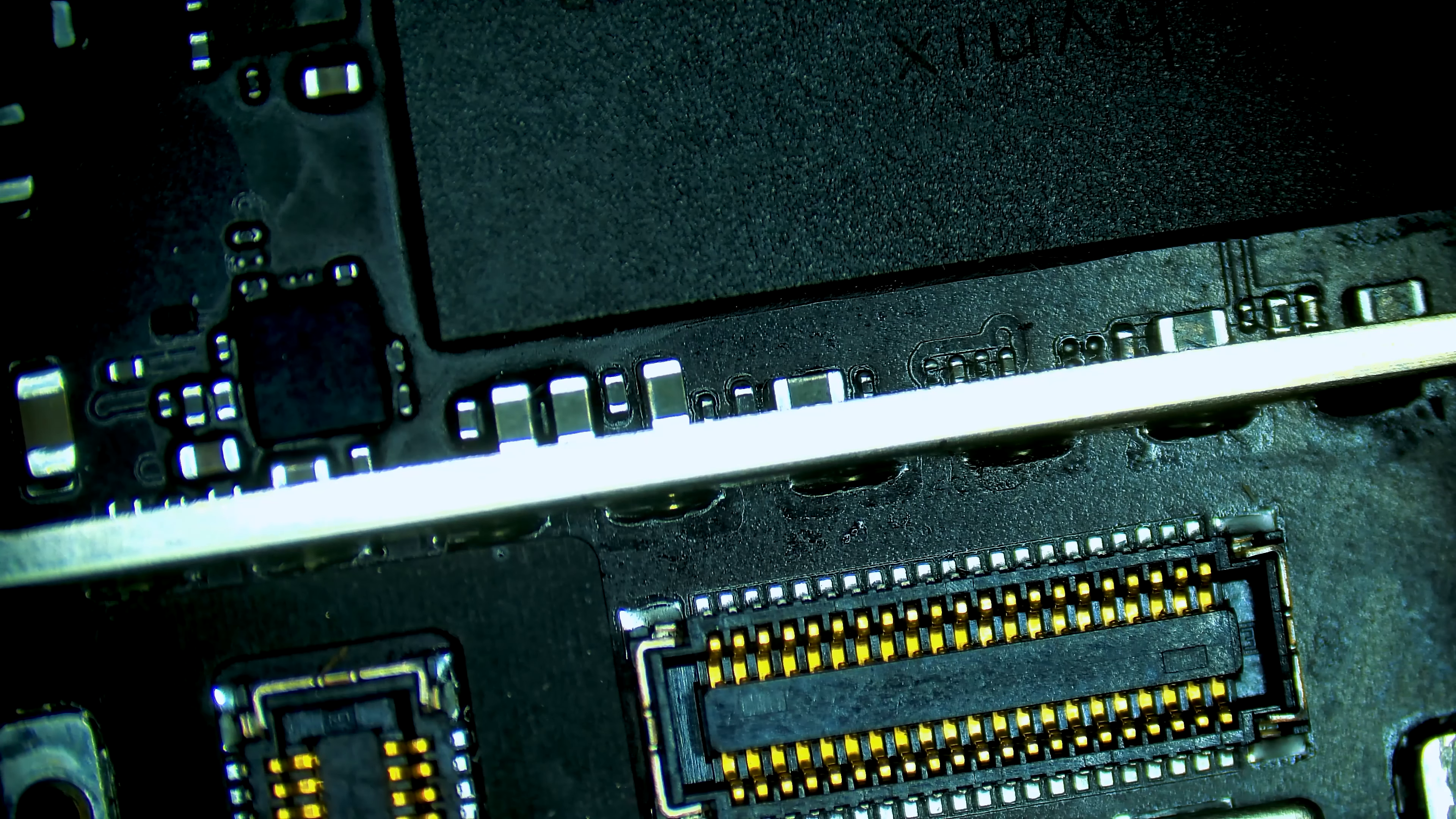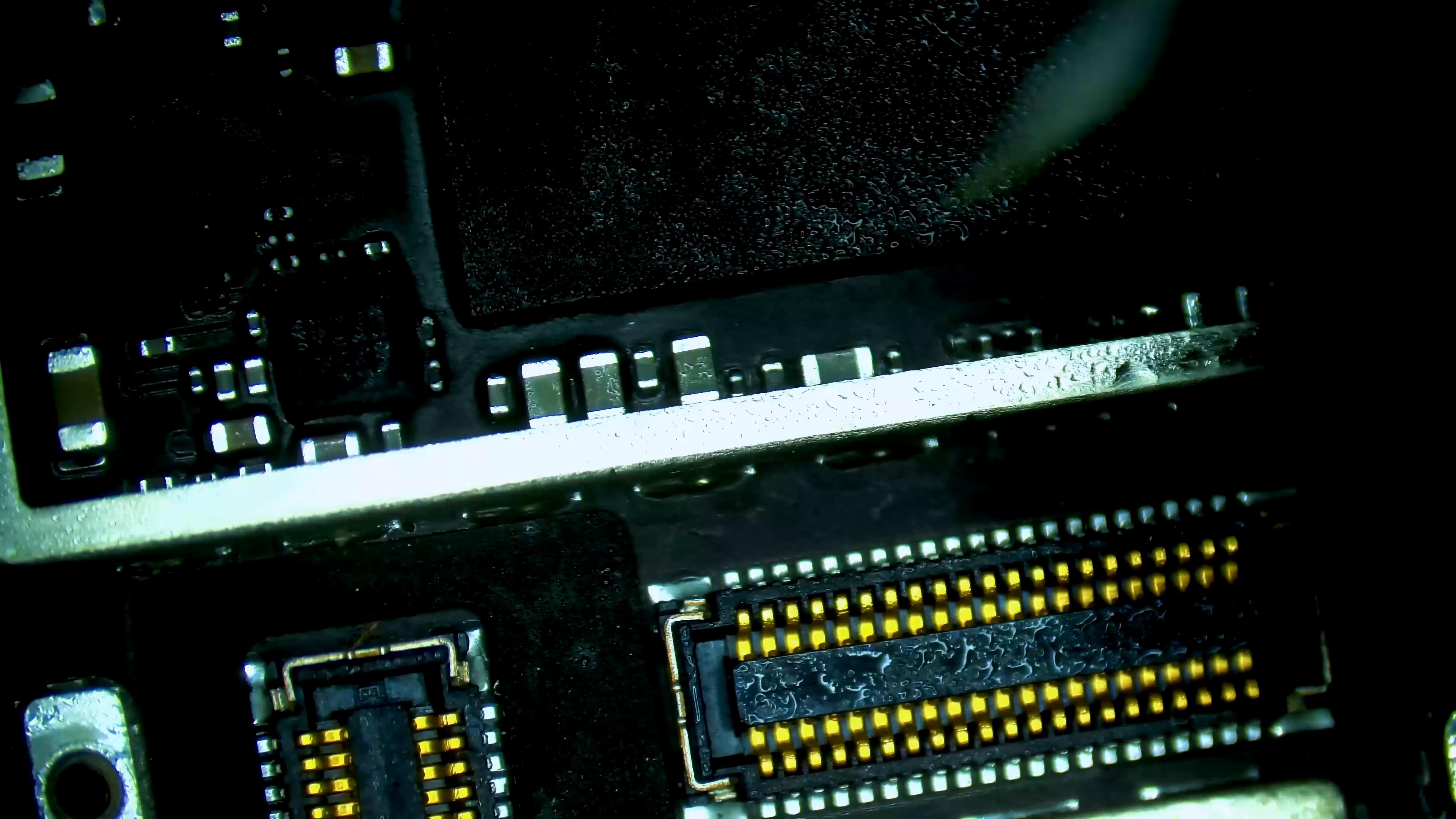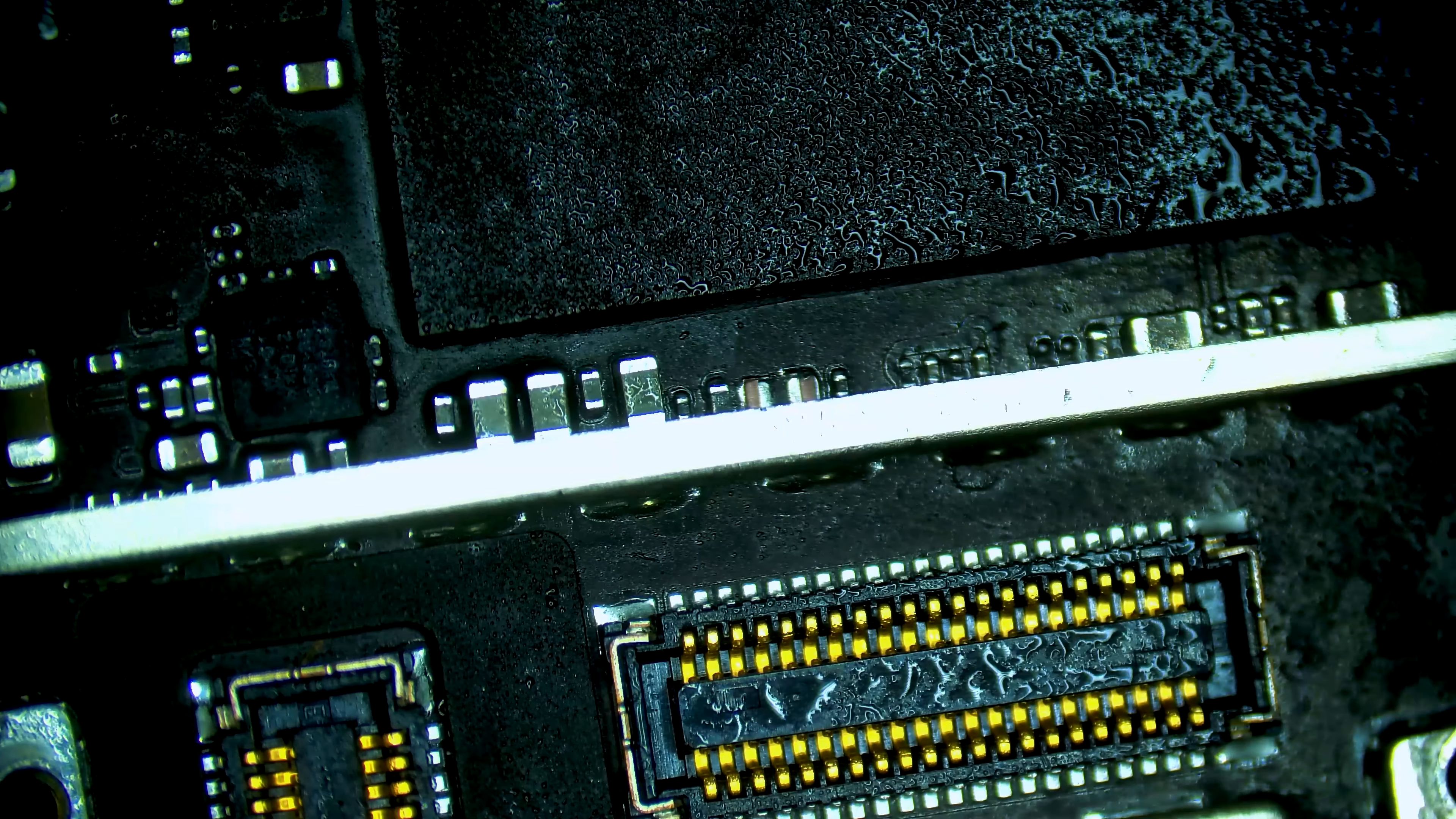So right here is our point of focus. Let's grab freeze spray and inject voltage. We have identified the problem cap. Let's remove it from the board here. So this cap is the problem. It had become a wire and shorted the PP3V3 line right to ground.